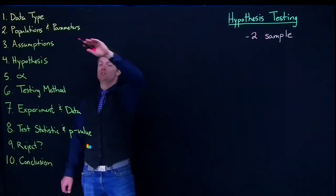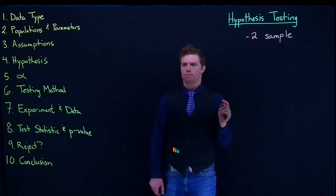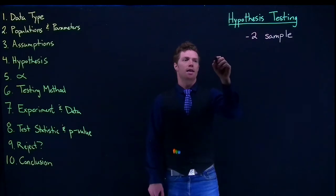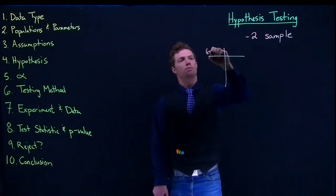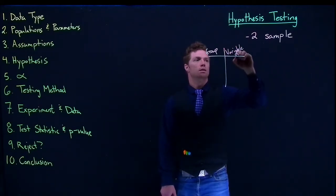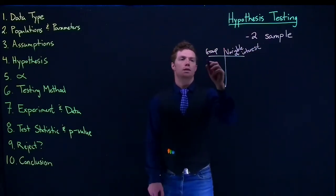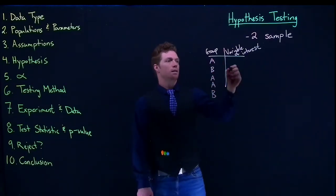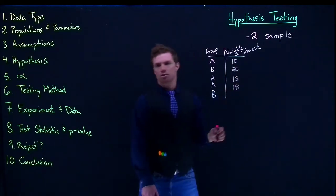We still need to figure out our data type — whether it's categorical or numerical. When we collect our data for means, we'll actually have two columns: one called the grouping column and one for the variable of interest. So we'll have group A, group B, group A, group B, and then values like 10, 20, 15, 18 going on down.